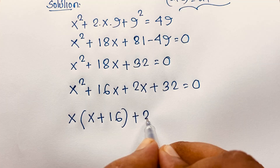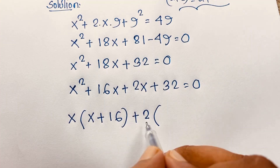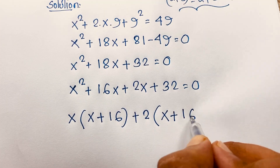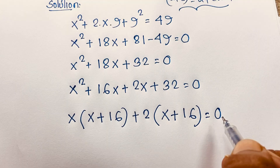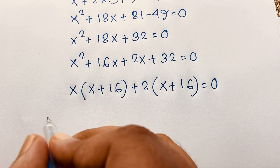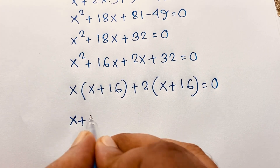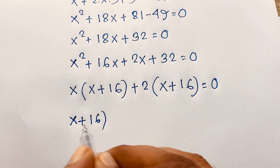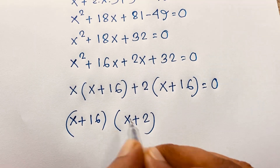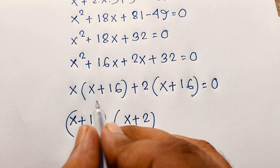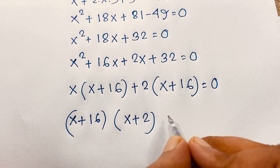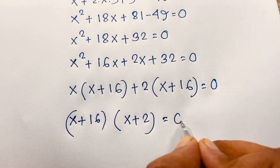Plus, here 2 is common. So this divided gives x, and this divided gives 16, equal to 0. Then here, (x + 16) is common. So if I take (x + 16) as common, it will be (x + 16)(x + 2) equal to 0.